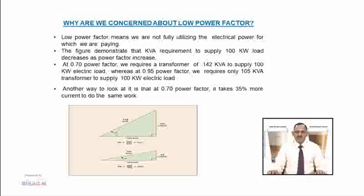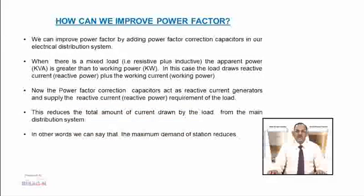As seen in the power triangles, when the actual load was 100 kW and power factor was 0.70, the transformer capacity was 142 kVA and reactive power was 100 kVAR. When the power factor is improved to 0.95, the same transformer supplies the same 100 kW load, but now the apparent power consumed is only 105 kVA and reactive power is 33 kVAR.